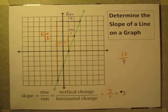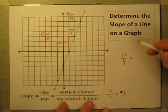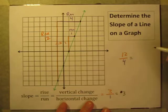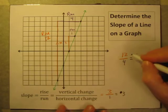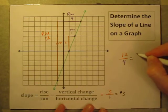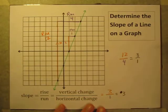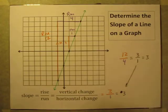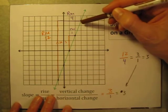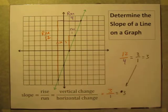Whenever you write slope as a fraction — rise over run — you always want to simplify and reduce to lowest terms. Twelve over four: the biggest number that goes into both is four. Four goes into twelve three times, and four goes into four once. So we get three over one, or just three — the same answer as before. It doesn't matter what points you pick on the line; as long as you get rise over run and reduce to lowest terms, you'll always get the same answer.